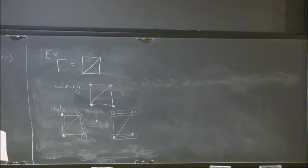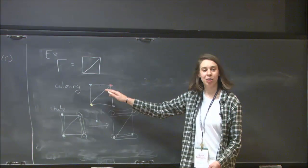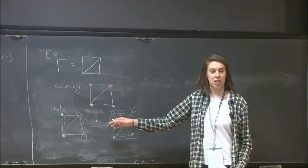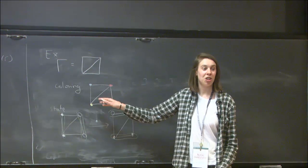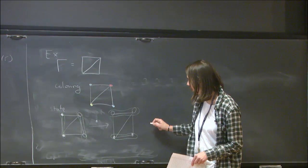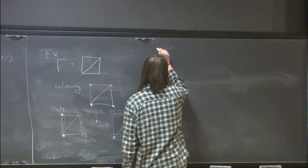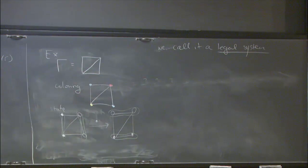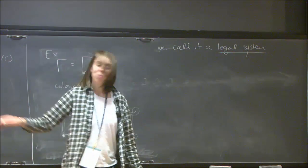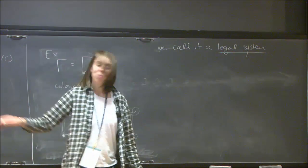You can check all other colors and combinations of colors — this will always work. All states reachable by switching colors have non-empty, connected on- and off-subgraphs. We call such a choice of state and coloring a legal system. This is an example of a legal system.